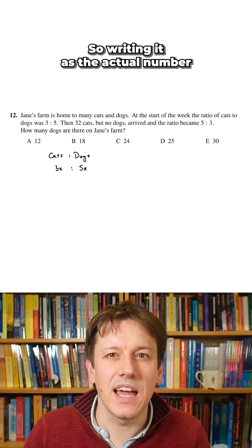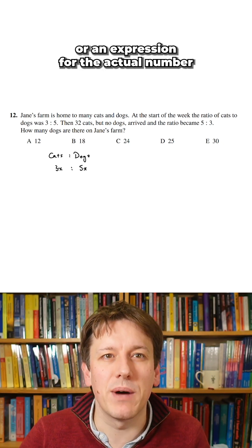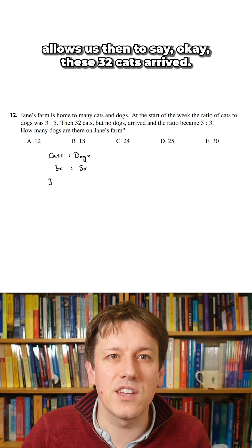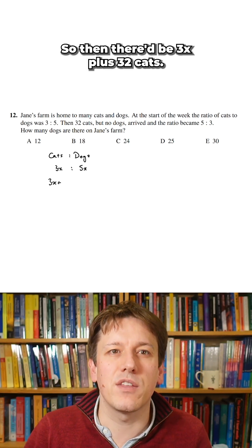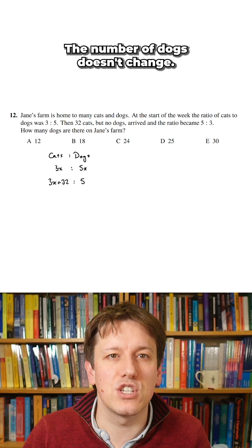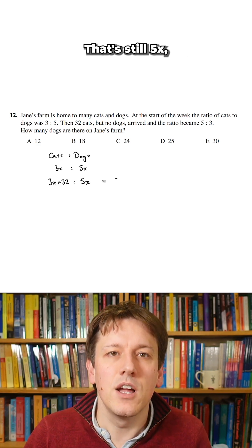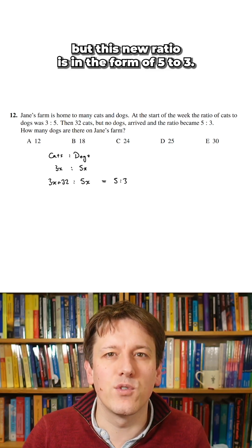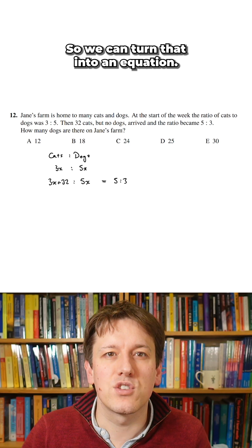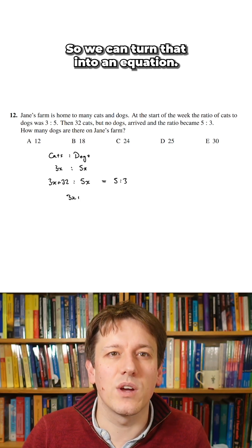Writing it as an expression for the actual number allows us then to say okay these 32 cats arrive so then there'd be 3x plus 32 cats. The number of dogs doesn't change that's still 5x but this new ratio is in the form five to three so we can turn that into an equation.